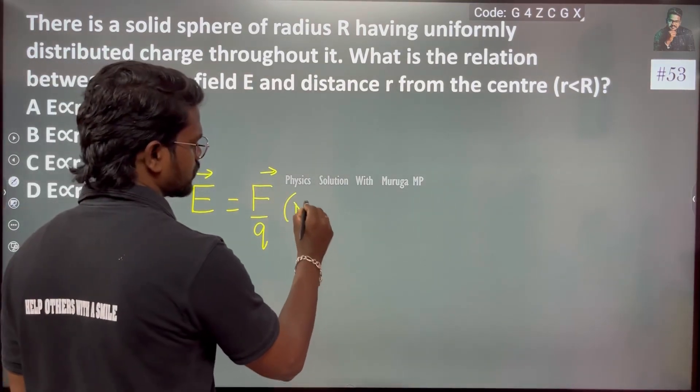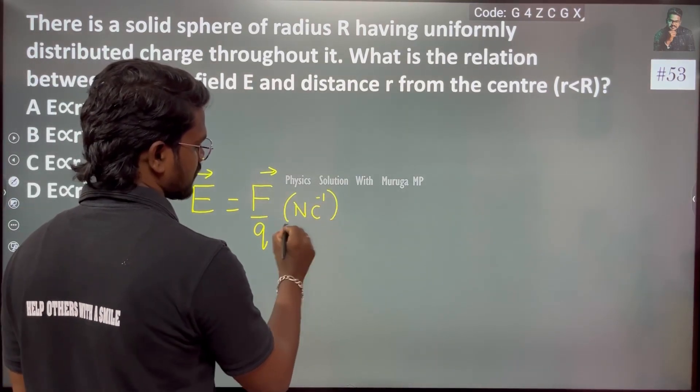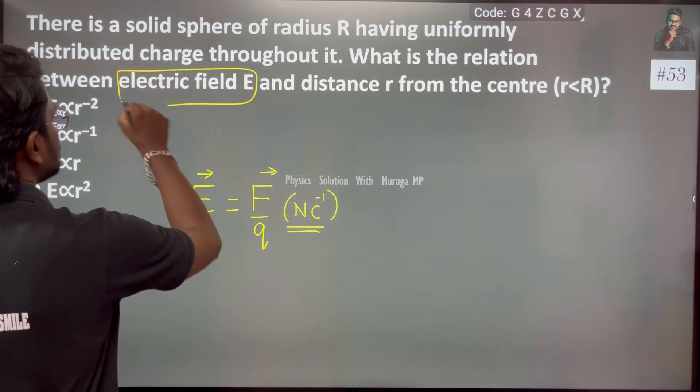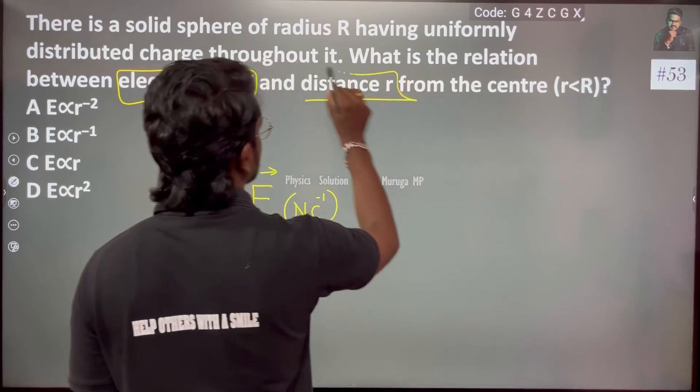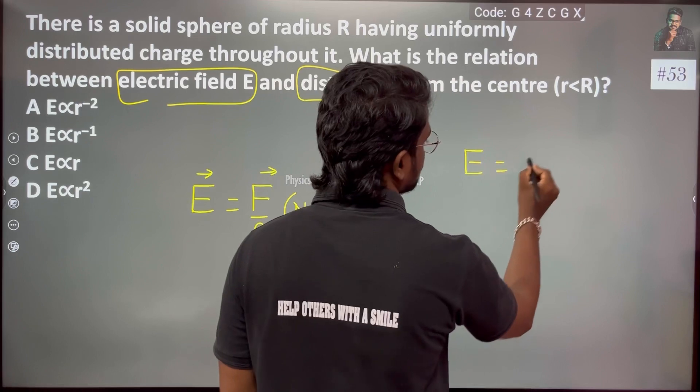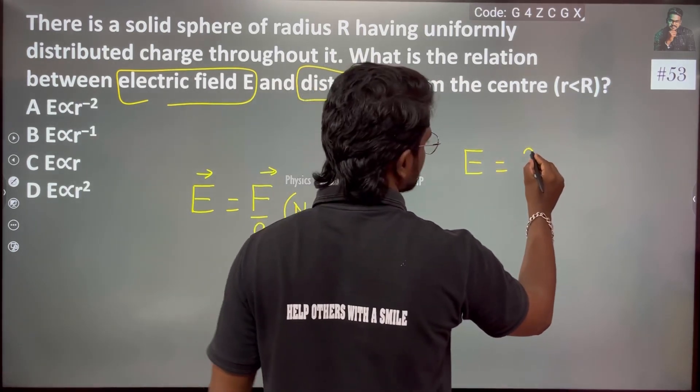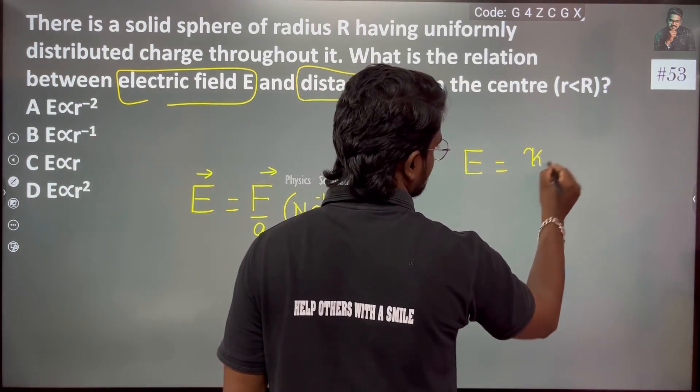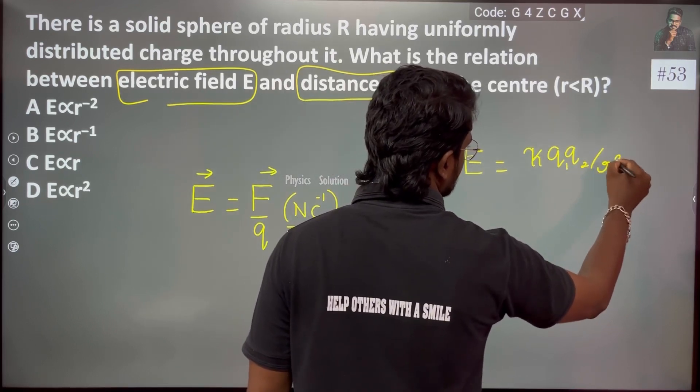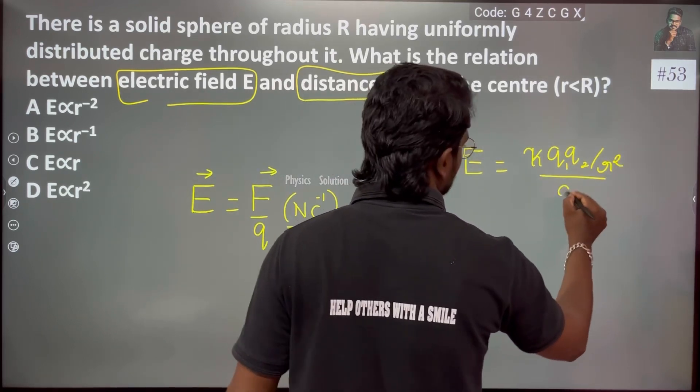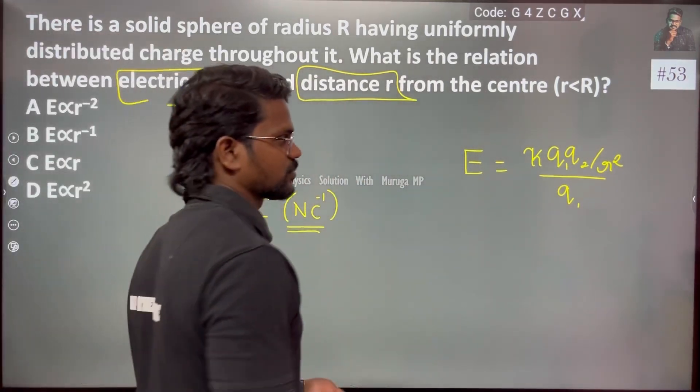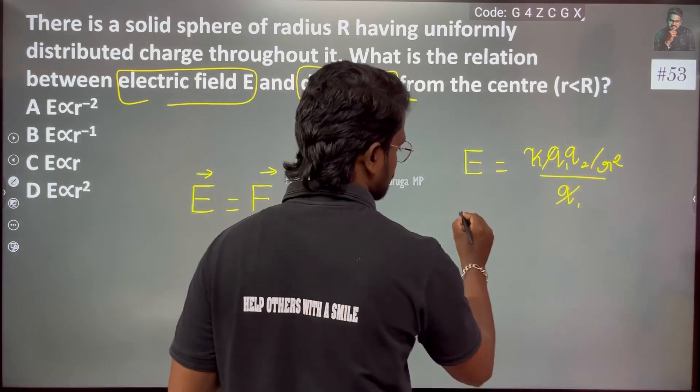Now, the relation between electric field and distance: the force is k times q1 q2 by r square, divided by the charge. Considering point charge, we can cancel the charge, so the electric field is...